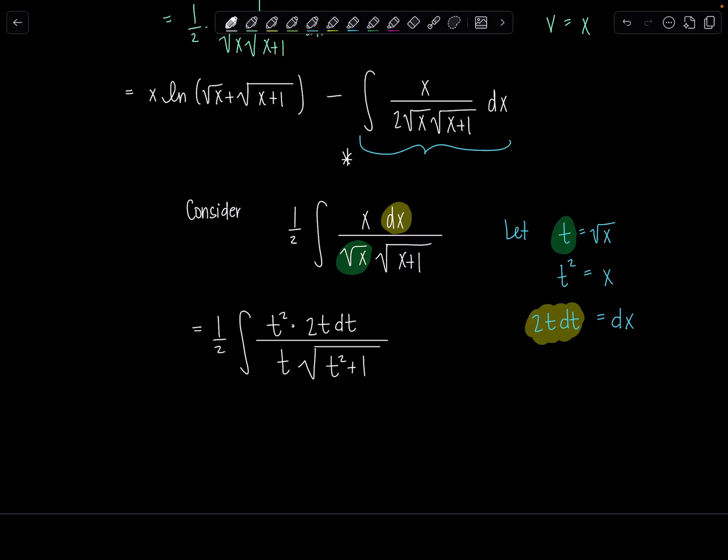All right. Now we have some canceling fun. Indeed we do. One half and two cancel. And then notice this t is gone with the t that was in the denominator. So then I just have integral t squared dt over square root t squared plus 1.